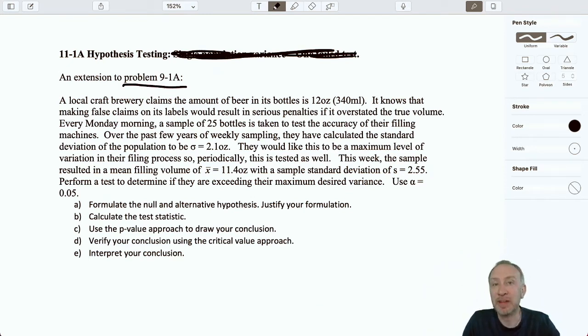This exercise is just an extension of the one that we did in module 9-1-A, where we're looking at a local brewery filling up their bottles of beer. In that exercise, we were looking at means, whether they were filling their bottles on average with at least the amount that it said on the label. On the label, it says there contained 12 ounces. We knew there were severe penalties if it overstated the volume, which meant under-filling the bottles.